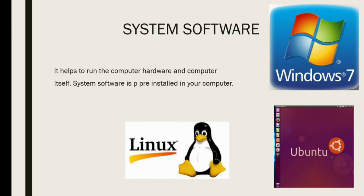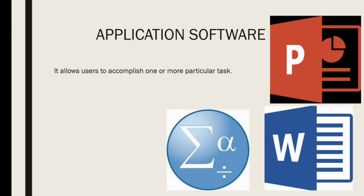Application Software allows users to accomplish one or more particular tasks. Examples include Microsoft Office Word, Excel, PowerPoint, Access, and Statistical Package for Social Science, SPSS.